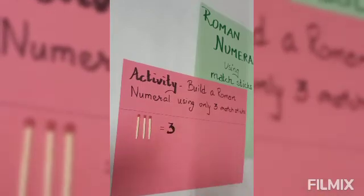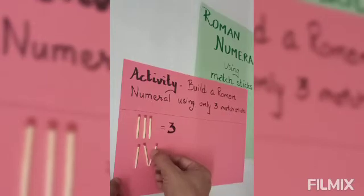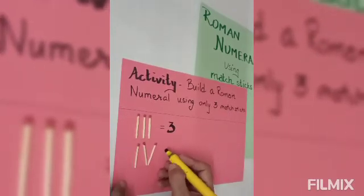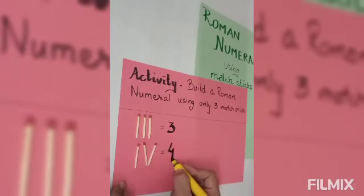Which other symbol, Roman numeral, can we write using only 3 matchsticks? Let us see. Number 4, shall we try? So, I and V. So yes, this is also possible. We have used just 3 matchsticks and we have written the number 4 in Roman numeral.